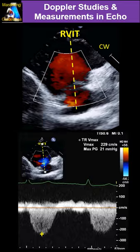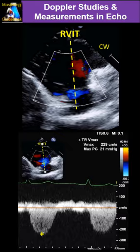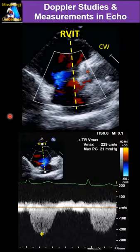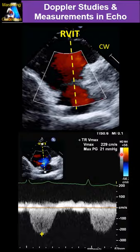First, on the PLAX view, we go to the RV inflow. We do continuous and color Doppler, and put the cursor over the TR jet. If there is any TR, align it as parallel as possible, then measure the peak. If there is significant TR, it's not a bad idea to also measure the VTI of TR, though it's not mandatory.